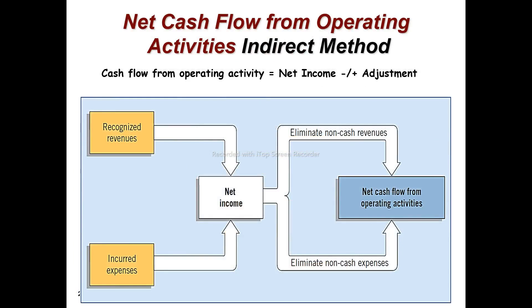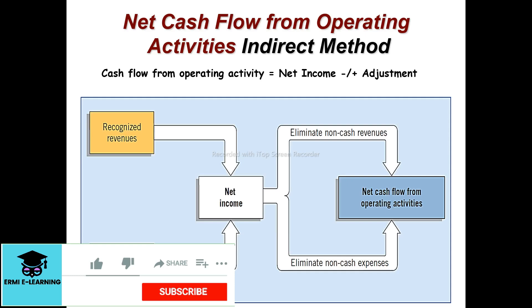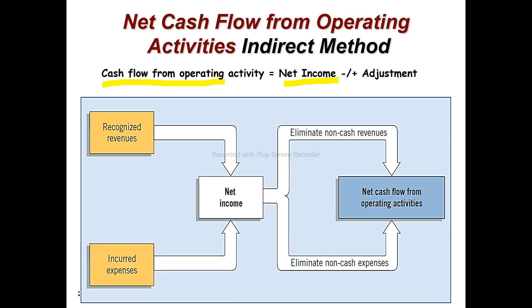For the indirect method, to find net cash flow from operating activities, you start with net income and then add plus or minus adjustments. These adjustments account for non-cash items and changes in working capital, resulting in the net cash flow from operating activities.